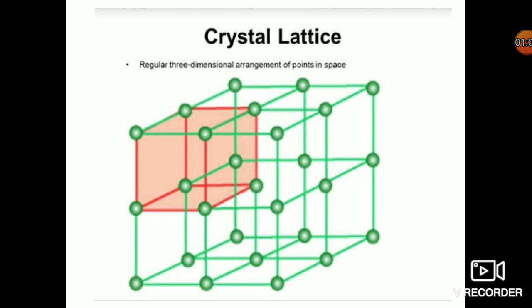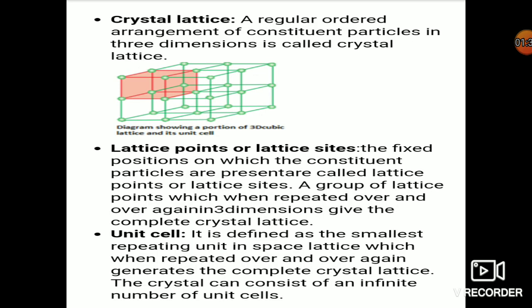This gives a crystal solid structure. Now, what is crystal lattice? Each point that is being repeated to form a three-dimensional structure is called the crystal lattice. So the crystal solid is nothing but the arrangement of crystal lattices. Crystal lattice is a regular ordered arrangement of the constituent particles in three dimensions.